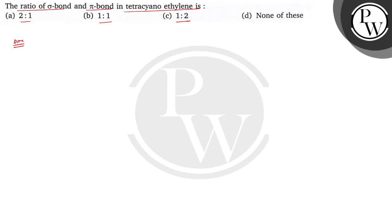Bachchow, sab se pahle hum kya kareinge? We will write down the structure of tetracyanoethylene. So, ethylene ka structure kya hooga? C double bond C, tetracyanoethylene.